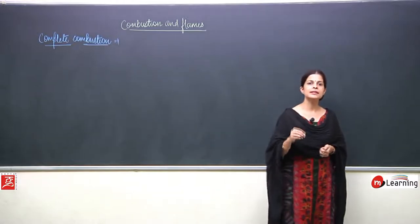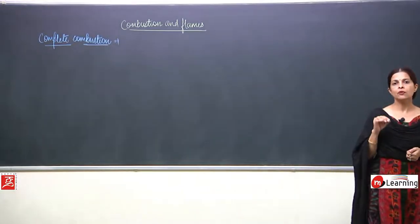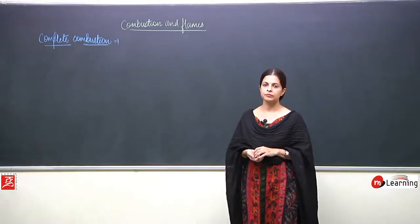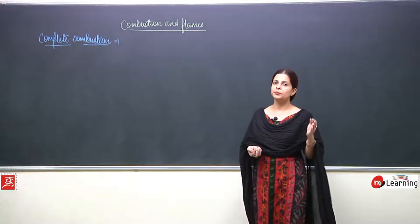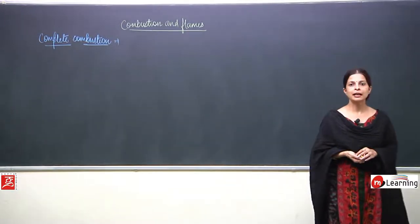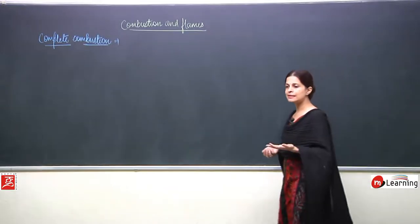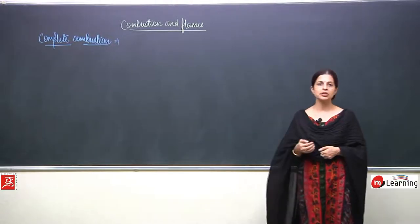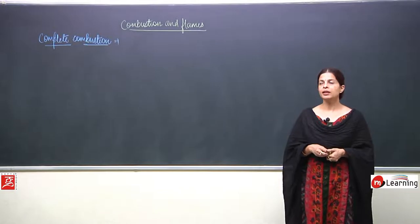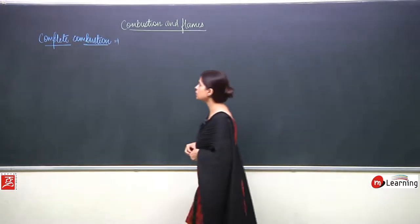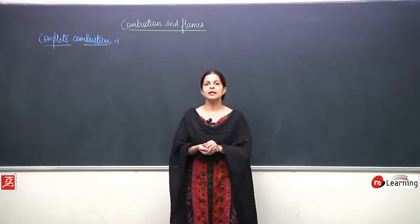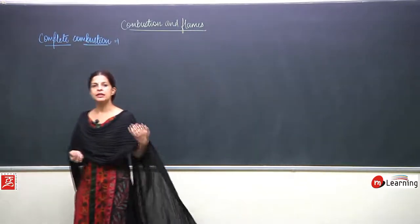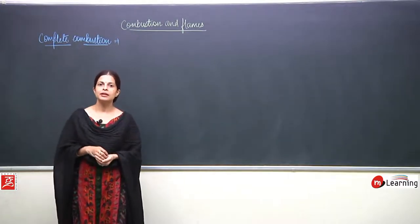When a substance burns in a sufficient amount of air, when a substance burns in a sufficient amount of oxygen, that means when the amount of air or oxygen is not sufficient for the process of combustion to take place, then in that case the combustion is known as incomplete combustion. Complete combustion: when a substance is burning in a sufficient amount of oxygen, or when a substance undergoes combustion in sufficient amount of air, then it is known as complete combustion.